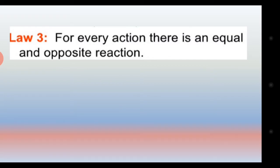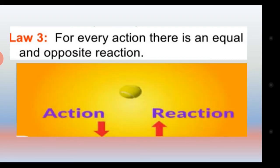Third law: For every action there is an equal and opposite reaction. ہر action کے لیے ایک opposite reaction ہوتا ہے جو کہ بالکل equal ہوتا ہے لیکن direction change ہوتی ہے۔ Action downward direction میں ہے جبکہ reaction upward direction میں ہے۔ یہاں پر اسی third law کو diagrammatically بتایا گیا ہے with the help of arrows۔